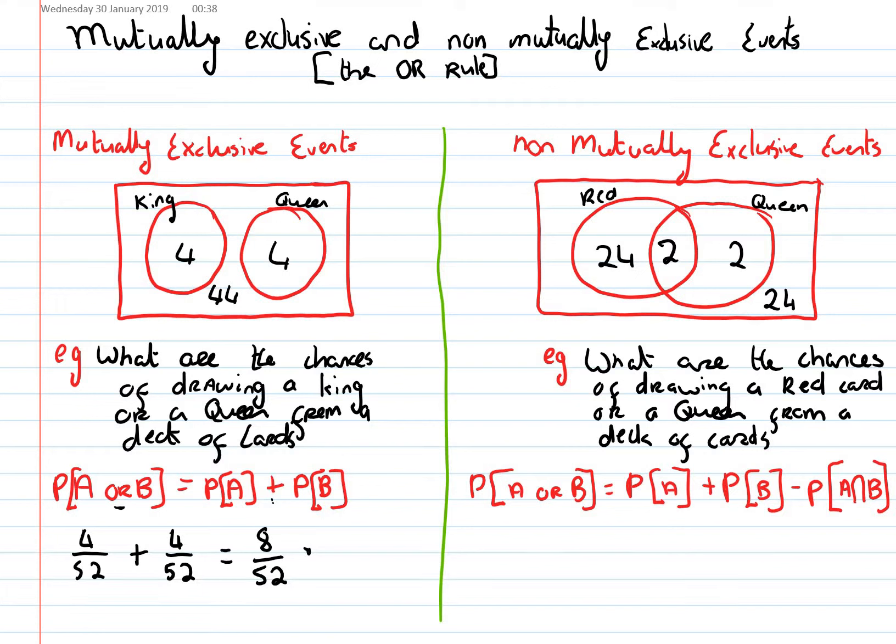So, the probability of A. Well, there's event A is getting a red card. And so, here we go. Probability of getting A is all of this. And that is 26 over 52